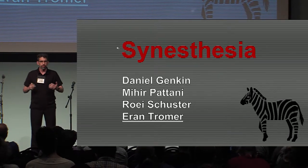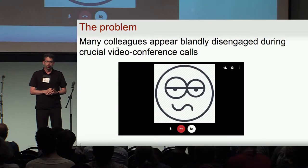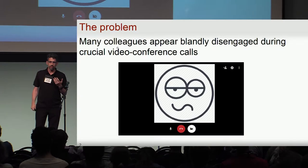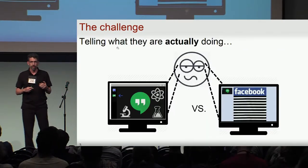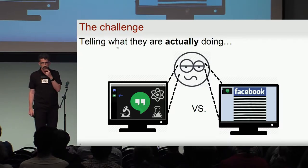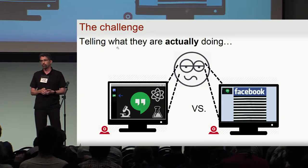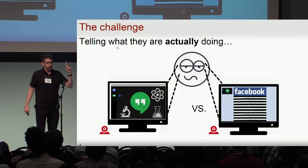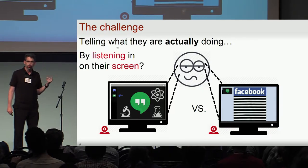It addresses a problem of grave importance for many researchers, which is the following. When we have a video conference with a colleague and they appear somewhat distracted or disengaged, is that because they are pondering the open problems that we have posed to them, or because they are browsing the blockchain? They probably have a webcam for the video conference, but it's pointing away from the screen. They also have a microphone placed in proximity to the screen, which raises the question: can we listen in on their screen?